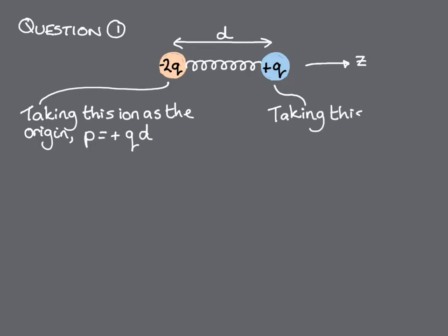And taking the cation as the origin, we get p is equal to plus q times 0, plus minus 2q times minus d, which is 2qd. That's twice as big as the first case.